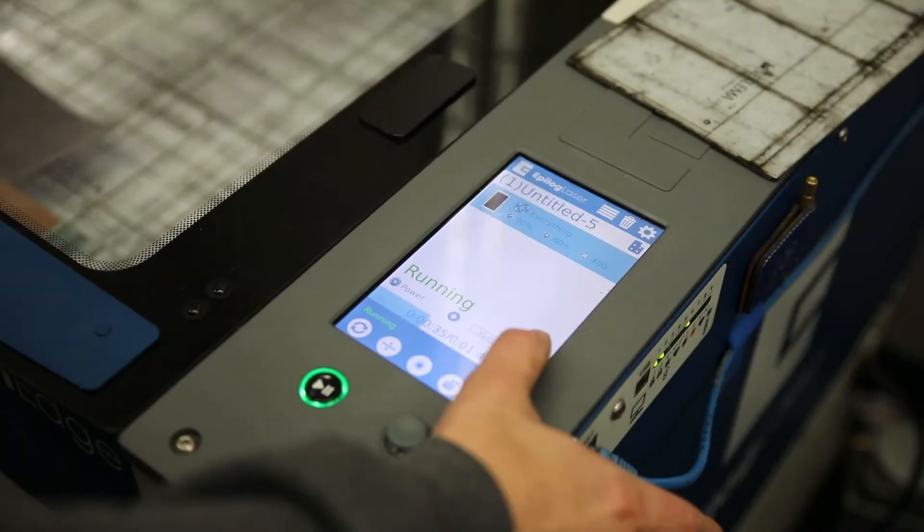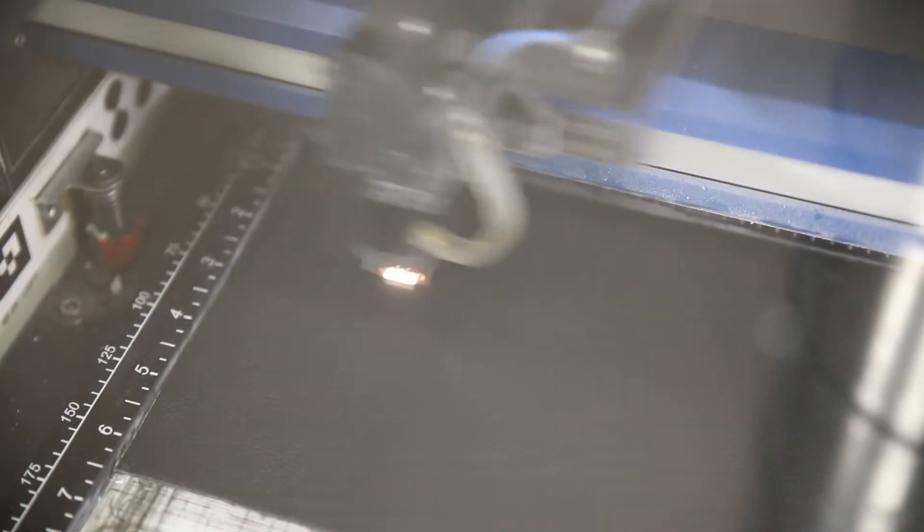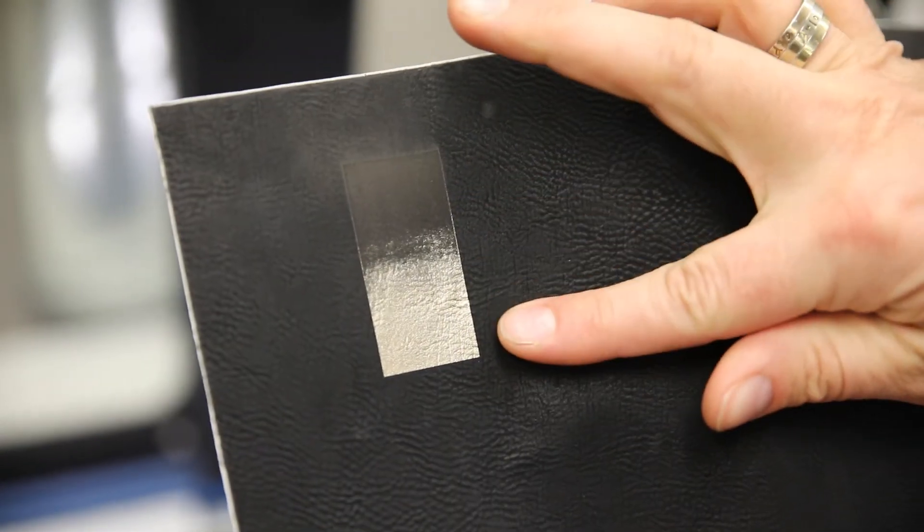The next type of testing you can do if your machine allows is to change the power as you laser a rectangle. It's important to only change one variable at a time. I'll then note my settings and send a vector graphic to ensure these will work for more than just a square swatch.